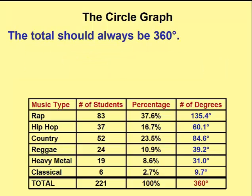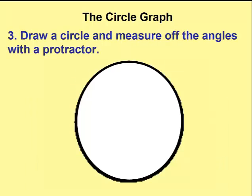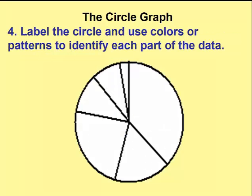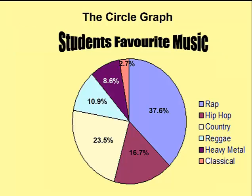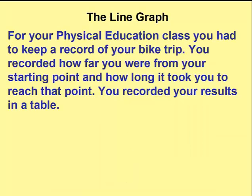To check our answers we can total the number of degrees, which should come to very close to or exactly 360. Now we're ready to put our answers on the actual circle. We'll use a protractor to measure off the angles, label the circle using patterns or colors for each different type of music, add titles, and put the percentages back in. There we have it — now everybody can see what music is the favorite.